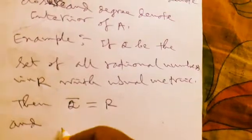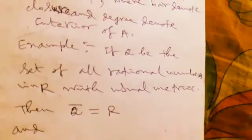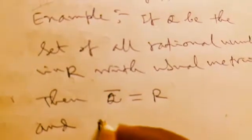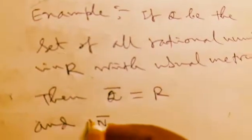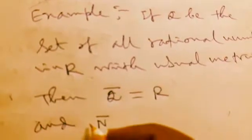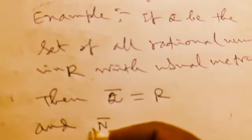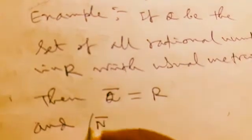And another example: if we consider the set of all natural numbers with usual metric is nowhere dense, that is N bar,